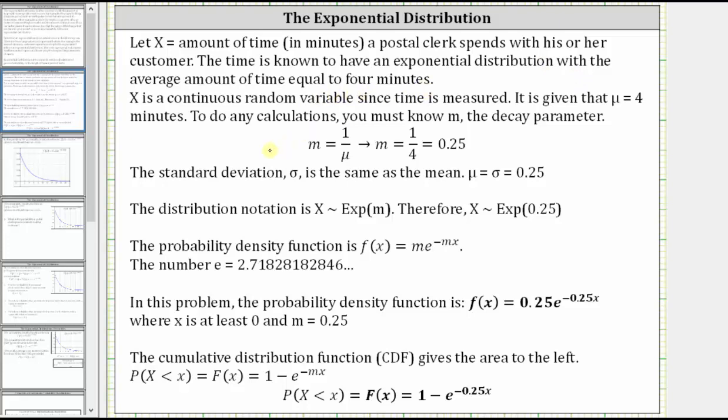And therefore, μ (the mean) is equal to 4 minutes, and the decay parameter is equal to 1 divided by μ, which in this case is 1 divided by 4, or 0.25.